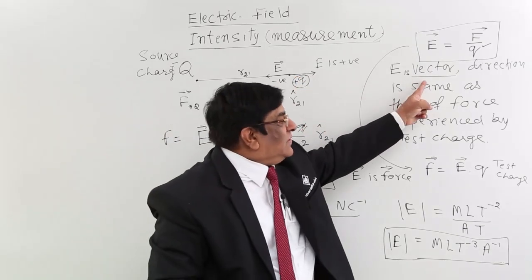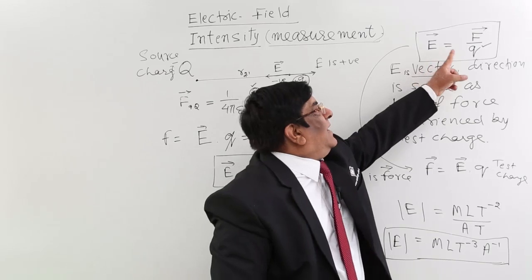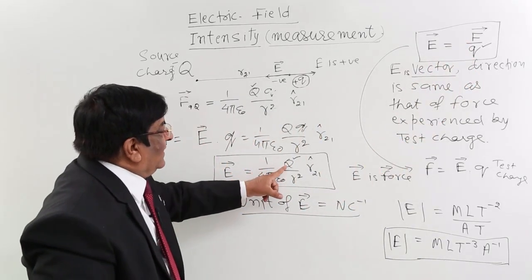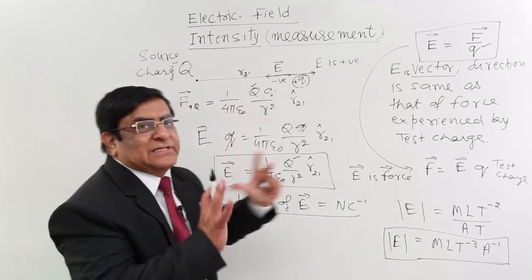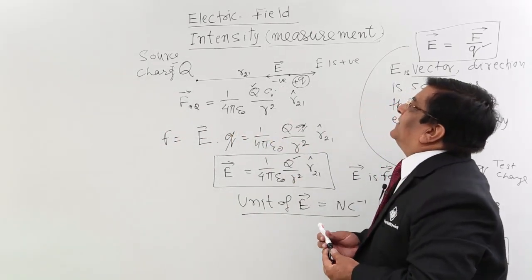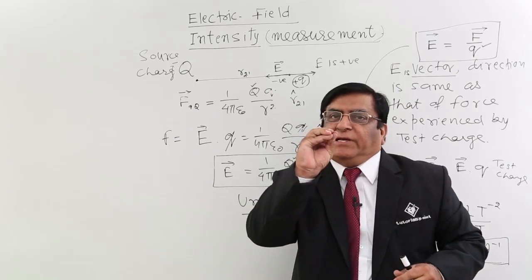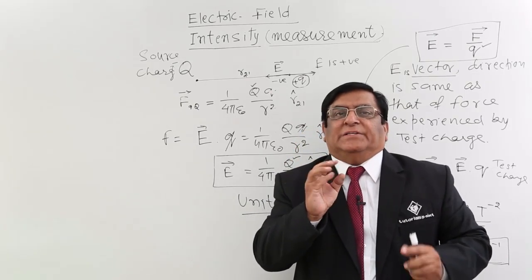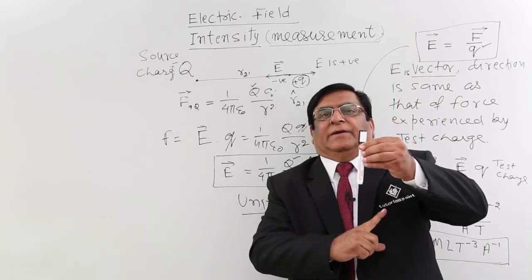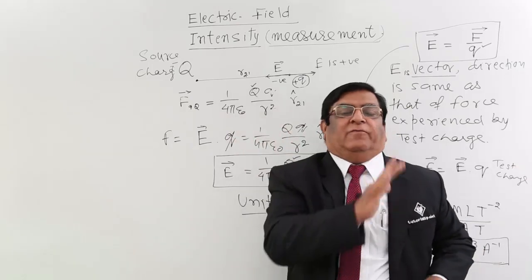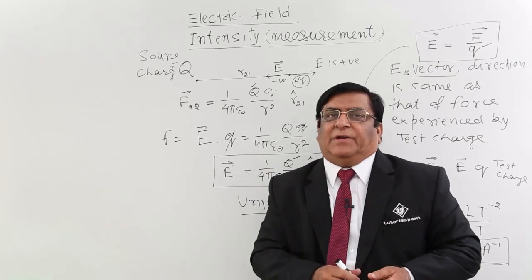So to summarize: electric field is a vector quantity, it has units of Newton per Coulomb, it has dimensions MLT⁻³A⁻¹, it can be calculated using test charge or source charge, and it is positive or negative depending on direction. In the next class, we will see the directions of electric field for different types of source charges — a point charge, a line charge, and a sheet charge — which give very different and interesting field patterns.